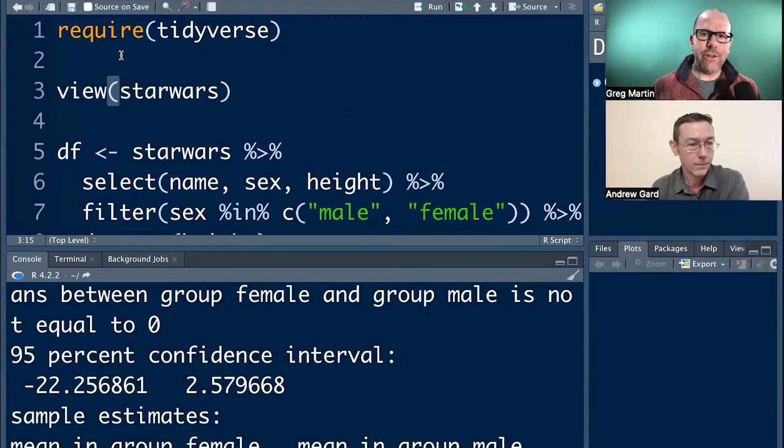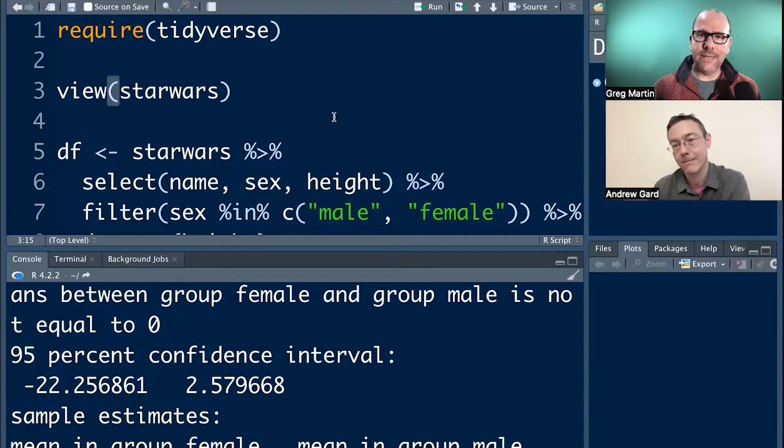And the difference between library and require, by the way, is if you're sharing code with other people and you're not sure if they've installed the same packages as you, instead of saying library, if you say require, and that this package is not installed on their computer, it'll install it and then call it. So, and if the package already exists on the computer that the code is running, then require works exactly like library. So that's a little trick.